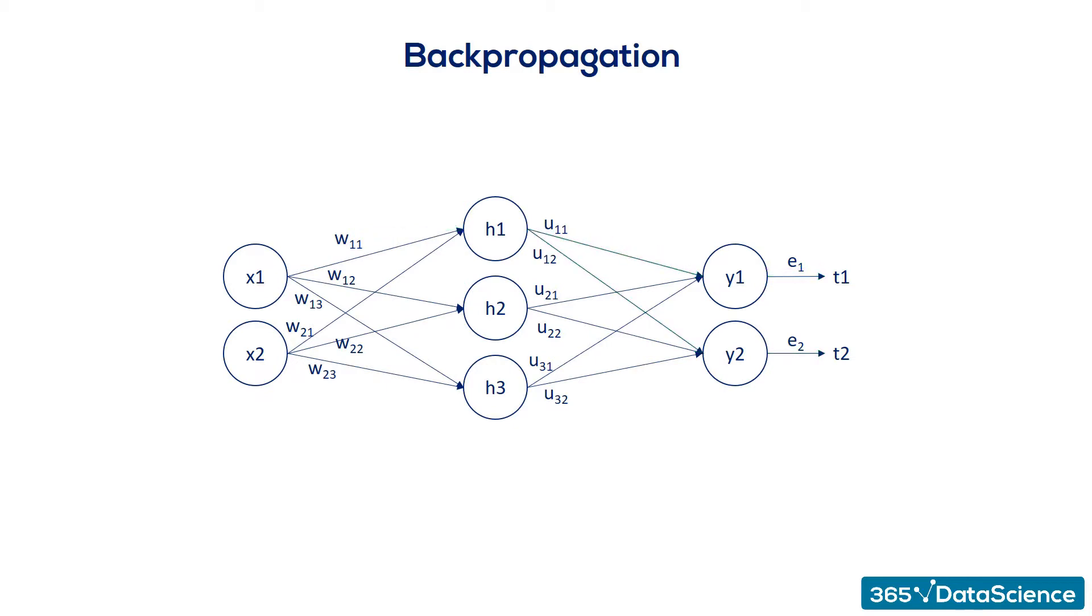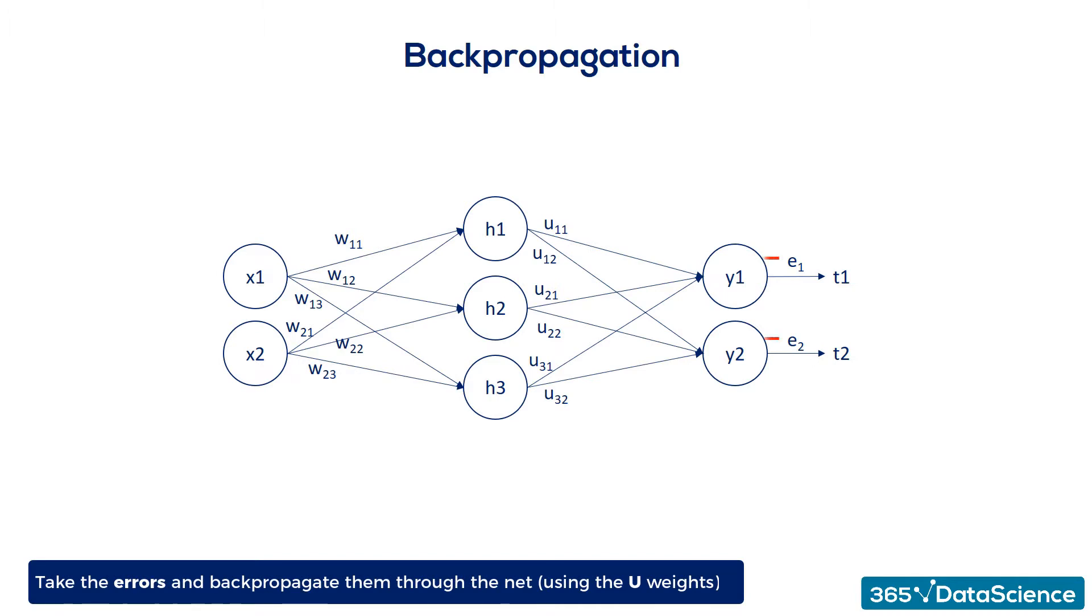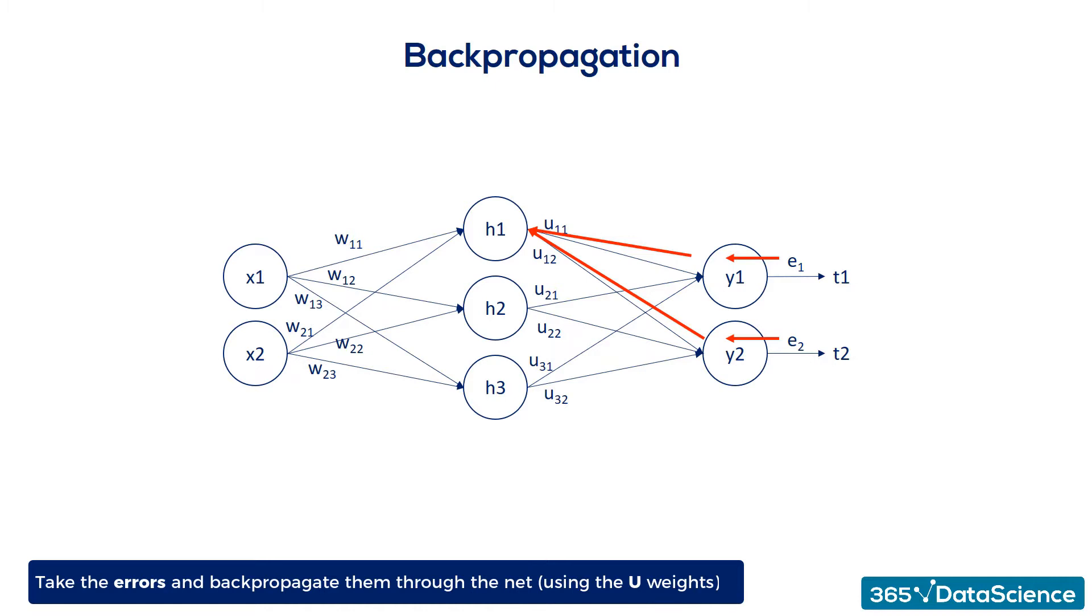The solution to this problem is to take the errors and back-propagate them through the net, using the weights. Knowing the U weights, we can measure the contribution of each hidden unit to the respective errors. Then, once we've found out the contribution of each hidden unit to the respective errors, we can update the W weights. So, essentially, through back-propagation, the algorithm identifies which weights lead to which errors.